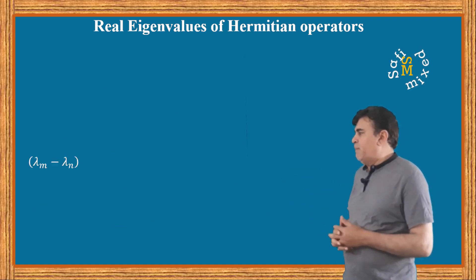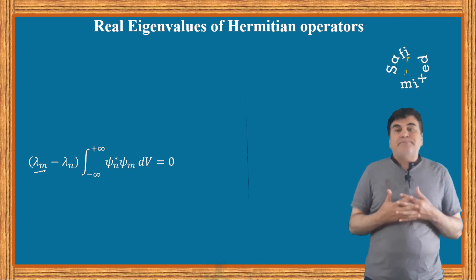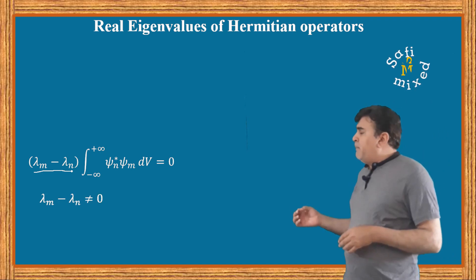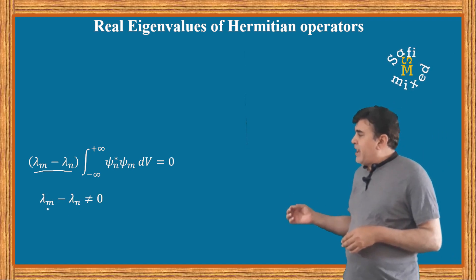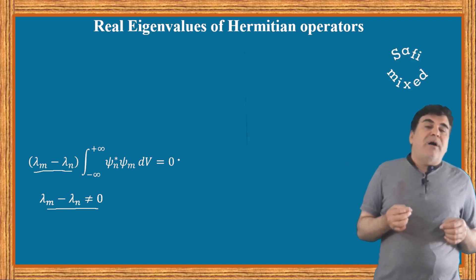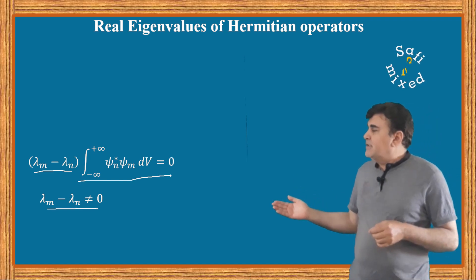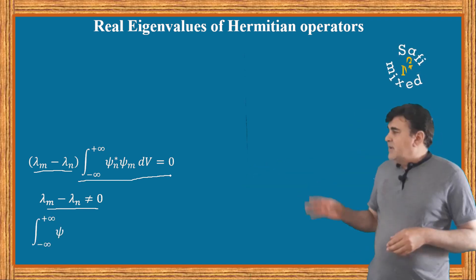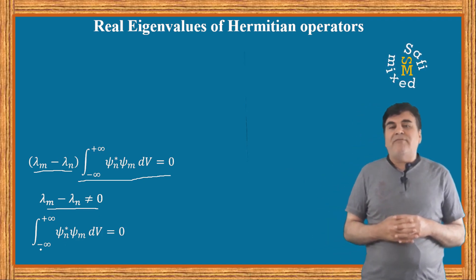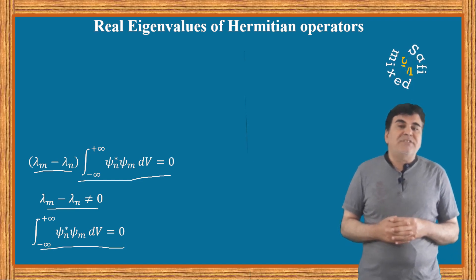This leads us to write the equation into this final form. Now the two eigenvalues, as per our initial assumption, are different; therefore λ_m minus λ_n cannot be equal to zero. The only choice for the above equation to be zero is that the integral part is zero.